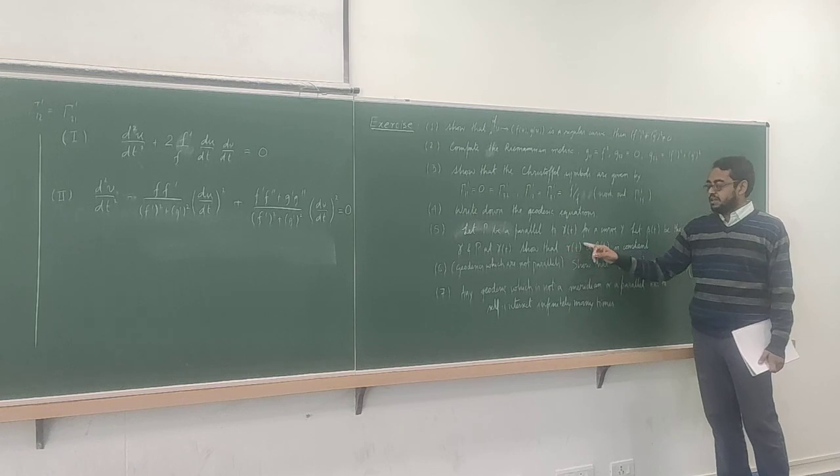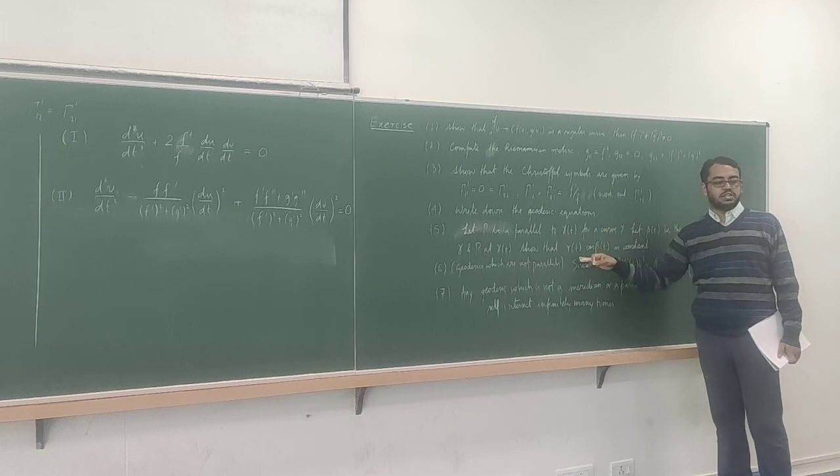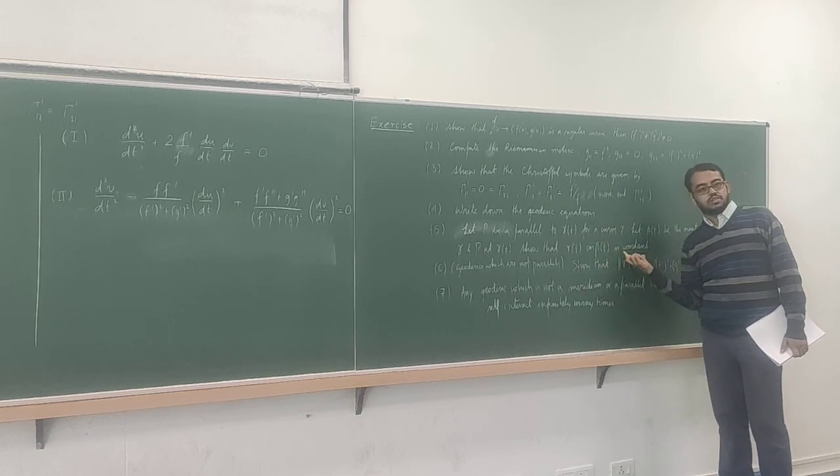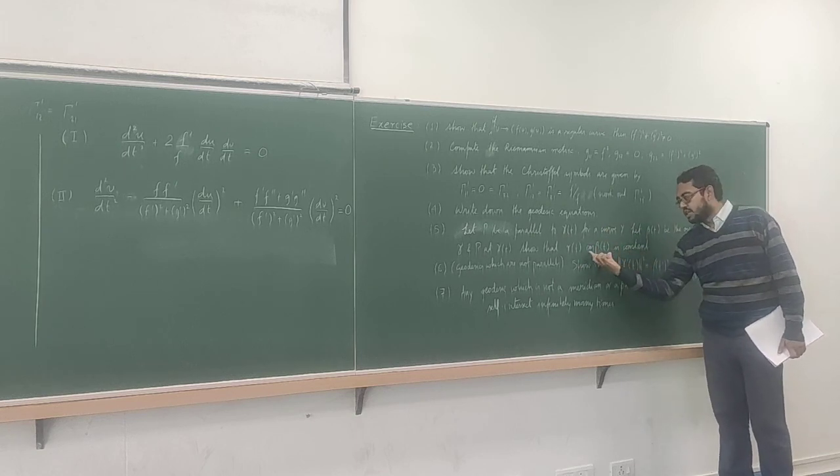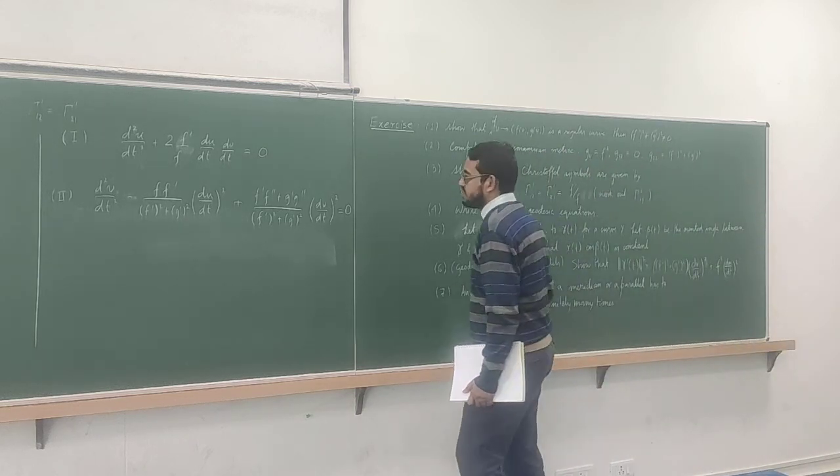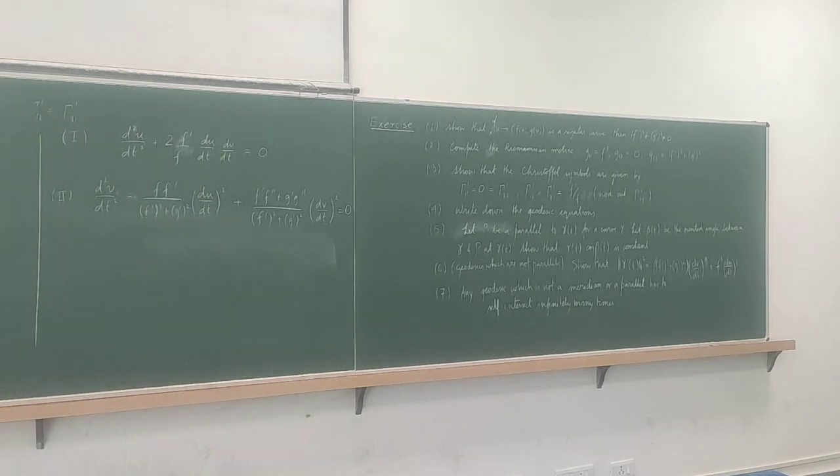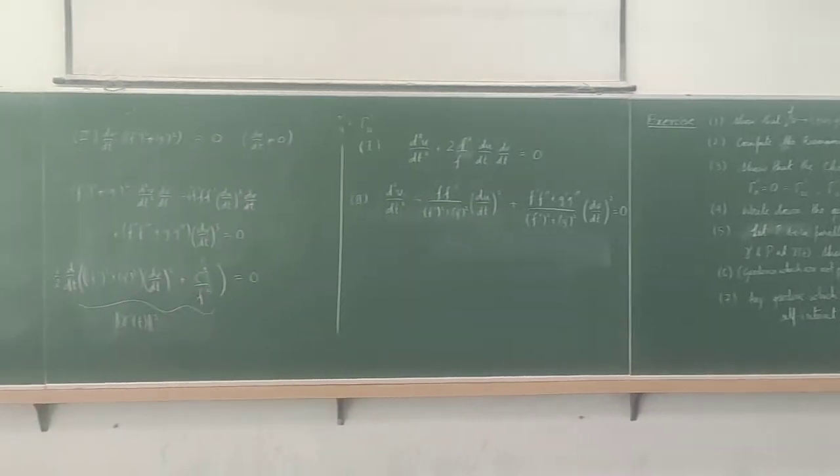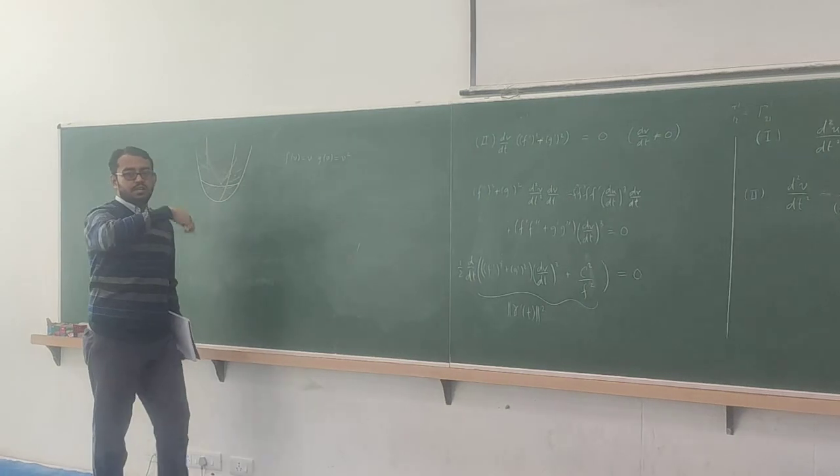But then if you can somehow say, that this quantity, if you know the limit of r of t, as t goes to plus infinity and minus infinity, and you know that this is a constant, then you know how cosine of beta t should be, so that analysis will actually tell you that if you do the geodesic, like the red one that I have drawn, this actually wraps around the parabola infinitely many times.